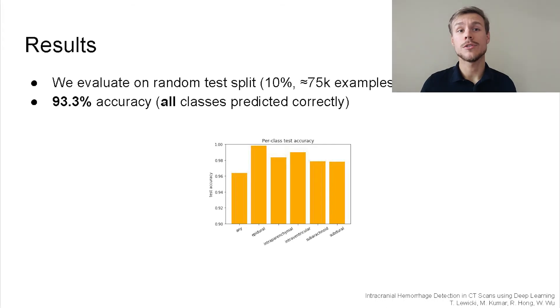We evaluate our model on the randomly sampled, never-seen test split of approximately 75,000 examples. We consider a prediction to be correct only if predictions for all six classes are correct. In the task defined in such a way, we achieve accuracy of 93.3%.